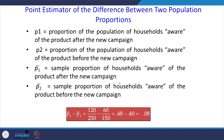We will take one problem on the point estimator of the difference between two population proportions. Let p1 be the proportion of households aware of a product after a new campaign, and p2 be the proportion before the new campaign. We are checking the effectiveness of the new promotional advertisement. p1 bar is the sample proportion after the campaign, and p2 bar is the sample proportion before. We will find the difference to see if there is any impact of the new campaign on awareness.